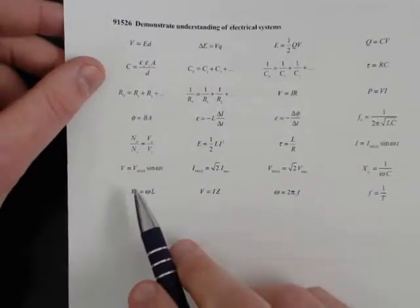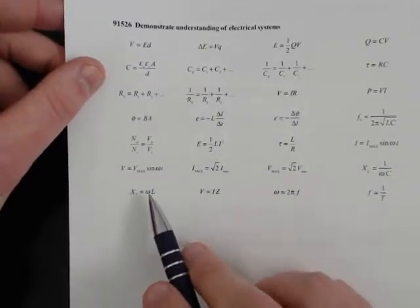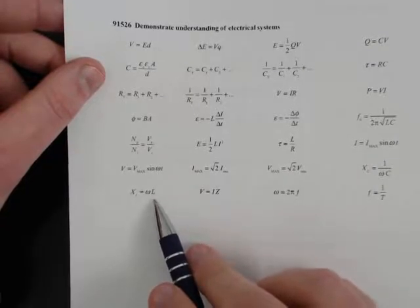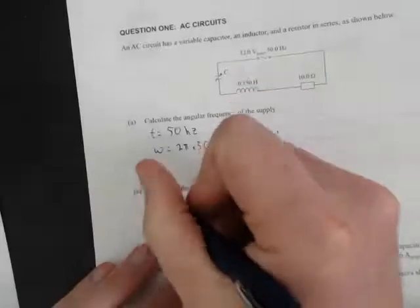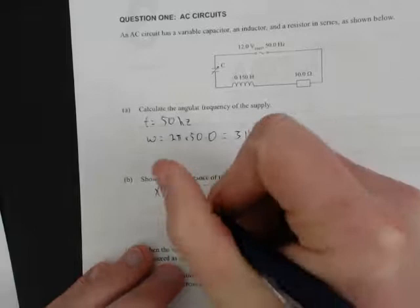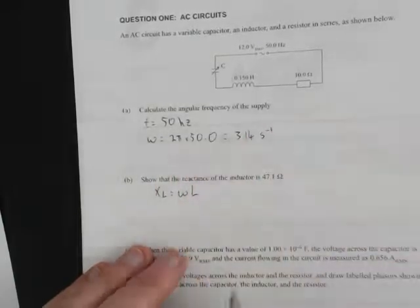The reactance for an inductor, with the symbol XL, is equal to the angular frequency ω that we just worked out times the inductance L which we're given. So XL equals ω times L.